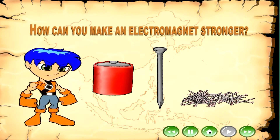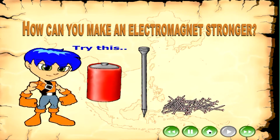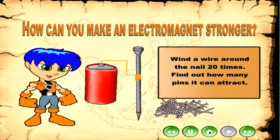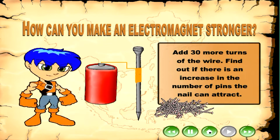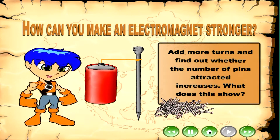How can you make an electromagnet stronger? Try this: wind the wire around the nail 20 times and find out how many pins it can attract. Add 30 more turns of the wire and find out if there is an increase in the number of pins the nail can attract. Add more turns and find out whether the number of pins attracted increases. What does this show?